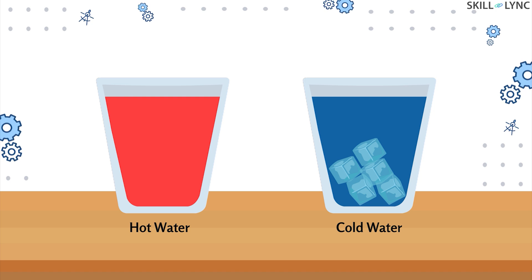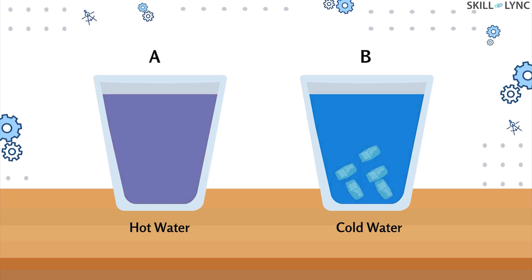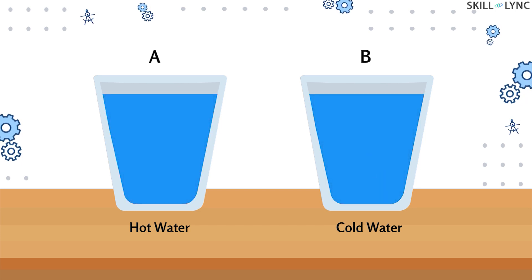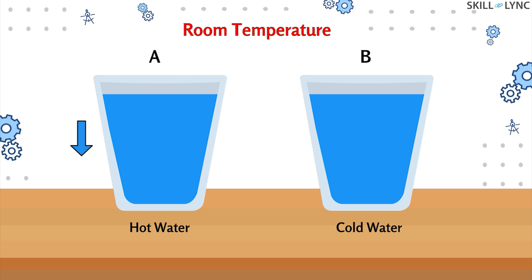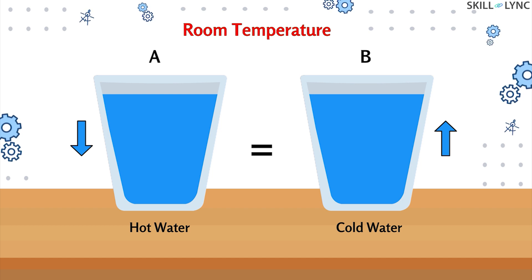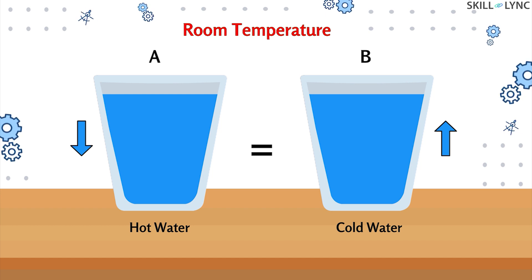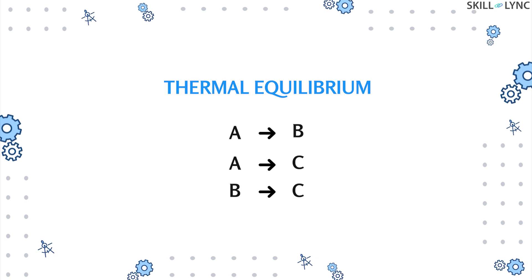Glass A contains hot water while glass B contains cold water. Let's leave these two glasses on the table for some time. The temperature of the hot water falls until it reaches room temperature, forming a thermal equilibrium between glass A and the room. During the same time, the temperature of the cold water rises until it equals the room temperature, forming another thermal equilibrium. So the temperature of water in glass A equals room temperature, and the temperature of water in glass B also equals room temperature — hence the temperatures of water in both glasses are equal.